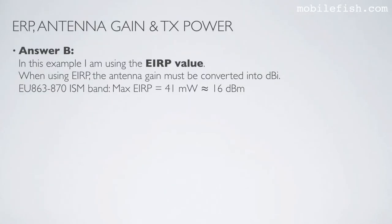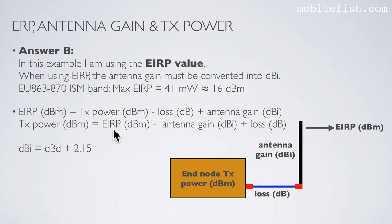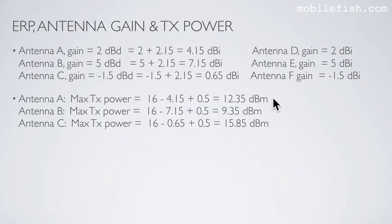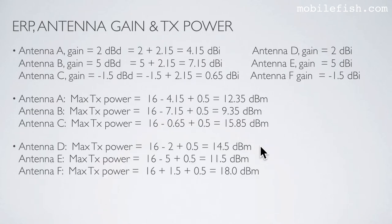Using the AERP approach: when using AERP, the antenna gain must be expressed in dBi. For the AU863 to 870 ISM band, the maximum AERP is 41 mW (approximately 16 dBm). The antenna gains originally in dBd must be converted to dBi — dBi equals dBd plus 2.15. The values already in dBi do not need conversion. The maximum transmission powers for antennas A, B, C, D, E, and F are then calculated accordingly.